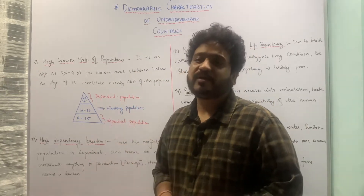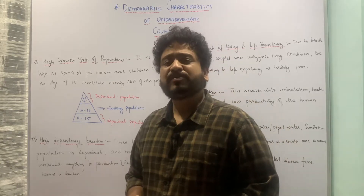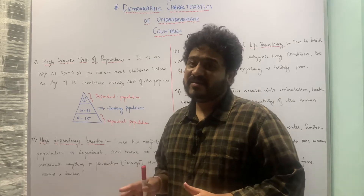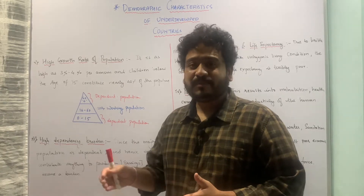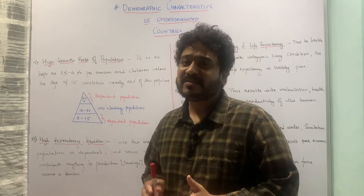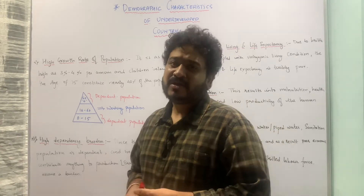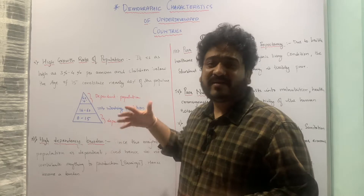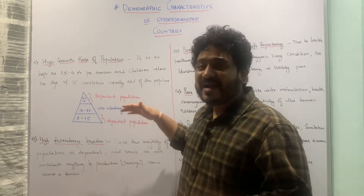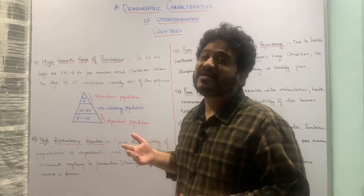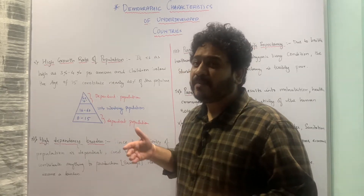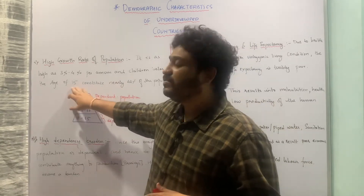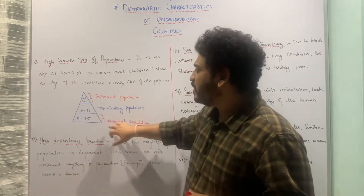The first point is high growth rate of population. High growth rate of population particularly boils down to the majority of population being in the lower age group — that is, children below the age of 15 years — meaning the population is an unproductive population. The population is growing constantly at a rate of three to four percent in developing economies, resulting in a young population or demographic dividend, but that dividend is an unproductive dividend.